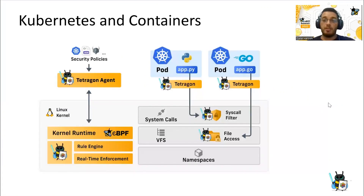In the Kubernetes and containers context, when Tetragram collects its events at the kernel space, it will associate all these events with processes and eventually with containers and pods. That allows users to better understand what the Kubernetes cluster is doing and what the security events are.